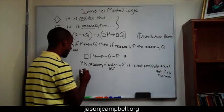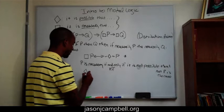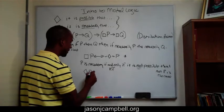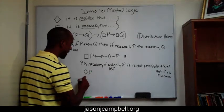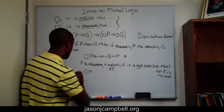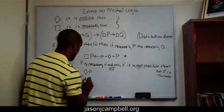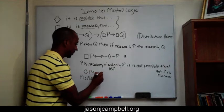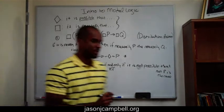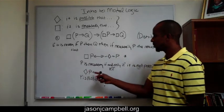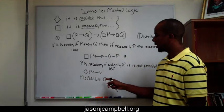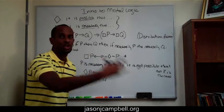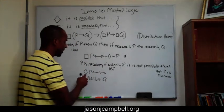The next thing we can do is look at the substitution rules for possible existence. Let's first word this out. P is possible — what does that mean? Well, it would be the opposite. Possible meaning like it could exist, it could be the case.